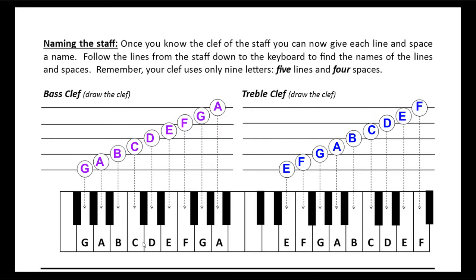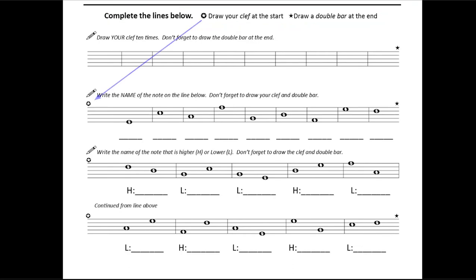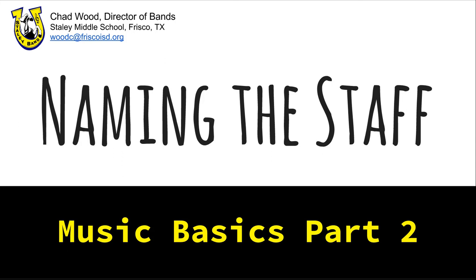Notice that the keyboard is working low to high, so the bottom line in treble clef is much higher than the bottom line in bass clef. Your homework asks you to be sure to draw your clef at the start — there are three places to draw your clef and three places to draw your double bar. Make sure that you review this page, and if you have any questions, be sure to ask your director.